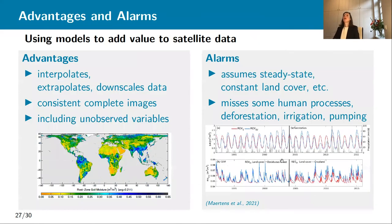I hope I've shown you that models are able to add value to our satellite data. They interpolate the data, extrapolate them to unobserved variables, downscale the data, and give us consistent, fully consistent water budgets and complete images of the Earth — such as, for example, root zone soil moisture maps based on brightness temperature estimates.